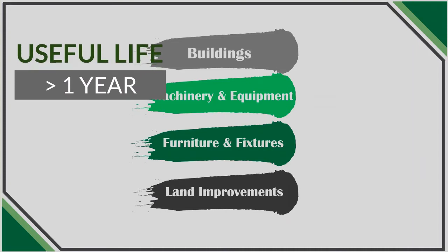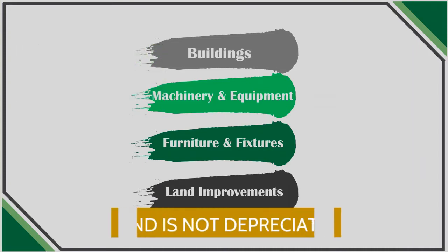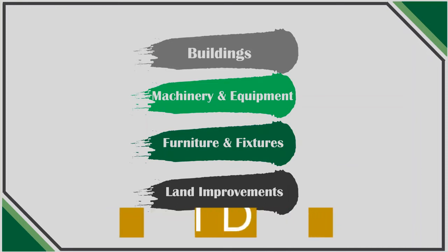One thing that's not included here is land. For US GAAP, land is considered an asset that is never depreciated. It sits on the books at its historical value — its purchase price on the day it was purchased — and stays there until that piece of land is disposed of.